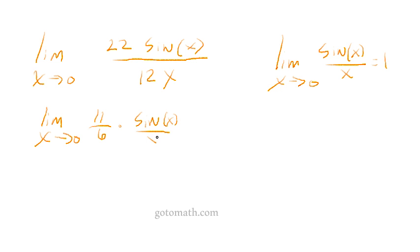And then we just have sine x over x. And I'll just put a bracket around that. Now the properties of the limit states that we can actually split this up into two separate limits.